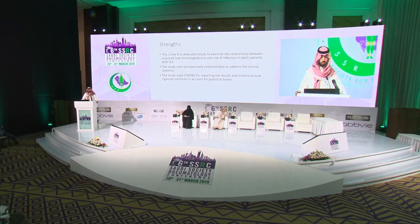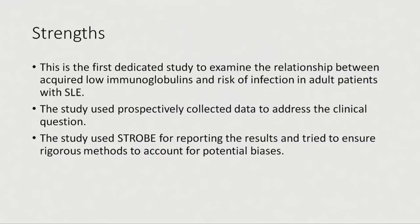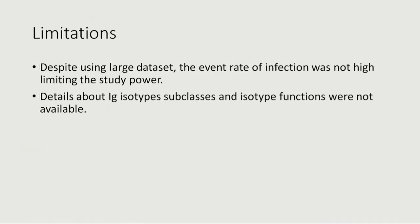I hope I convinced you with different models that we are trying to find the truth or be as close to the truth as possible. The limitation is simply that this is an observational study, and that's the only way you can do such a study, because you can't randomize a patient to have low immunoglobulin or not.